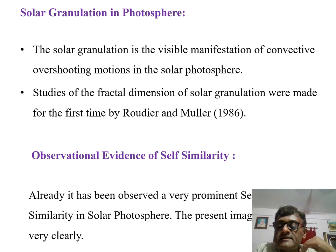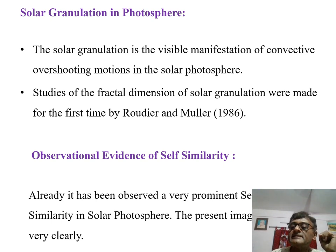Let us start with the present topic, solar granulation in photosphere. The solar granulation is the visible manifestation of convective overshooting motions in the solar photosphere. Studies of the fractal dimension of solar granulation were made for the first time by Rodier and Muller in the year 1986. There are certain observational evidence of self-similarity. It has been noted a very prominent kind of scale invariant nature in the solar photosphere from the data as well as from the image.